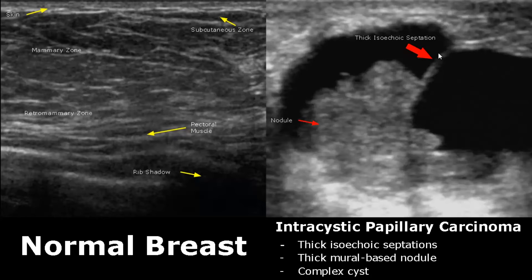This image has a thick isoechoic septation as well. These thick isoechoic septations are usually a sign of malignancy, as opposed to thin hyperechoic septations which are usually benign. Here is a large thick mural nodule.